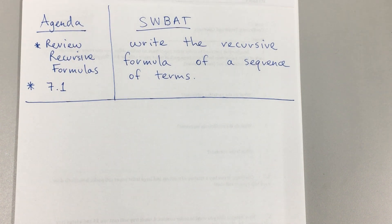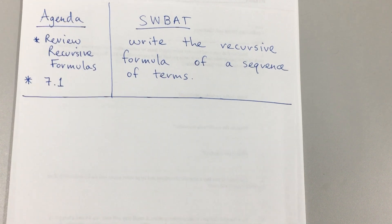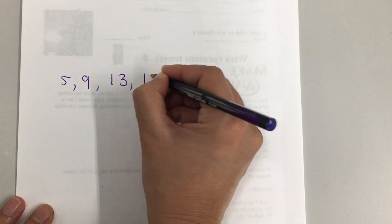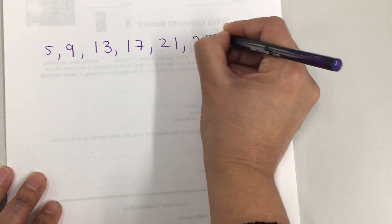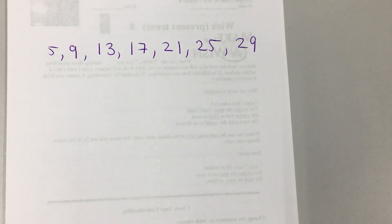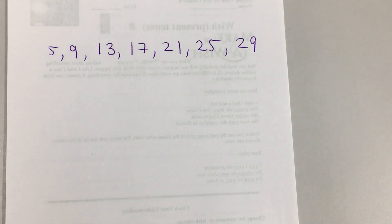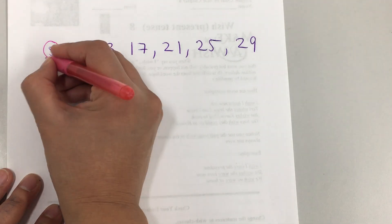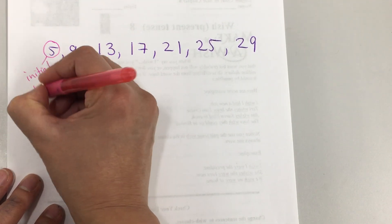This is the first term. The sequence is: 5, 9, 13, 17, 21, 25, 29. To write the recursive formula, you will need 2 things. The first thing is the initial point. The initial point is always the first term, so that's the initial point.